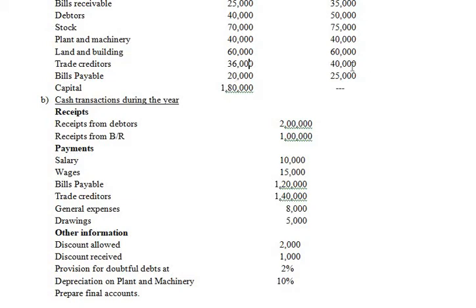Trade creditors: opening and closing given, so entries go into the total creditors account. Bills payable: opening and closing given, so entries go into the bills payable account. Capital 1,80,000 goes directly to the liabilities side of the balance sheet. In the balance sheet, capital is written as 1,80,000, to which you add net profit from the profit and loss account and deduct drawings of 5,000.